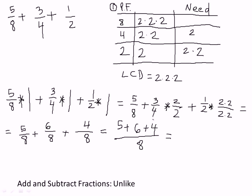5 plus 6 plus 4 equals 15, so we get 15 over 8. This is an improper fraction. Let's check if we can reduce it: 15 is 3 times 5, and 8 is 2 times 2 times 2 — there are no common factors, so we can't reduce. We can leave it as 15 eighths, and when we go to Excel we'll do it both ways. But let's also convert it to a mixed number.